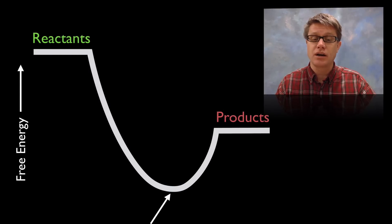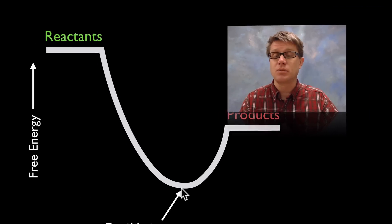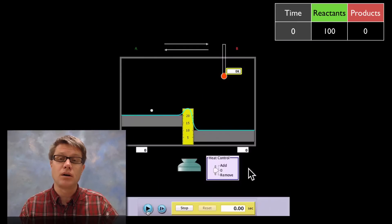If we use an energy diagram like this, K is going to be right here at the bottom, and Q is going to be anywhere along that path.